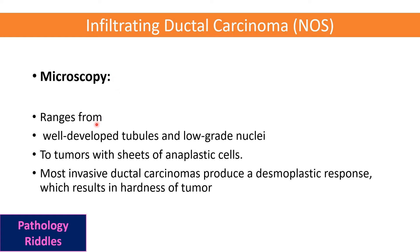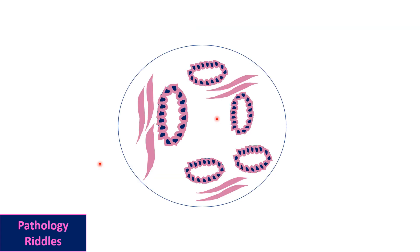Microscopically, infiltrating ductal carcinoma can range from well-developed tubules with low-grade nuclei to sheets of anaplastic cells with angry-looking nuclei. Most invasive ductal carcinomas produce a tissue reaction called desmoplastic response, which results in hardness of the tumor — this is excessive fibrosis production in the surrounding tissue.